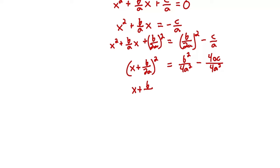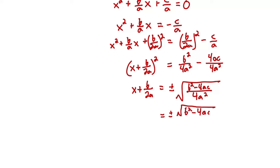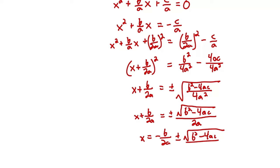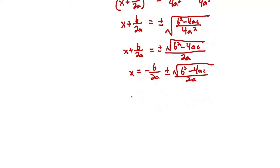Then we take the square root of both sides: x plus b over 2a equals plus or minus the square root of b squared minus 4ac over 4a squared. Since the square root of a quotient equals the quotient of the square roots, we write the right-hand side as plus or minus the square root of b squared minus 4ac all over the square root of 4a squared, which is just 2a. Then subtracting b over 2a from both sides and combining into a single fraction gives us the quadratic formula: x equals negative b plus or minus the square root of b squared minus 4ac, all over 2a.